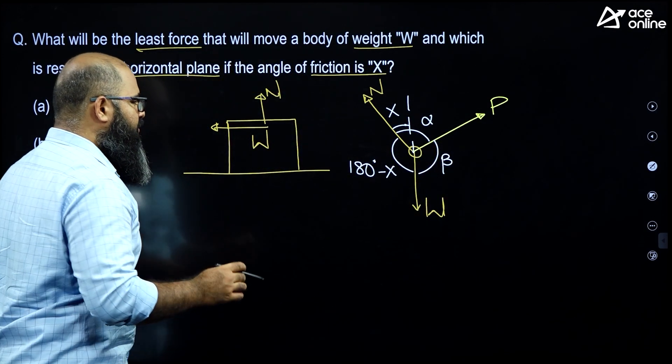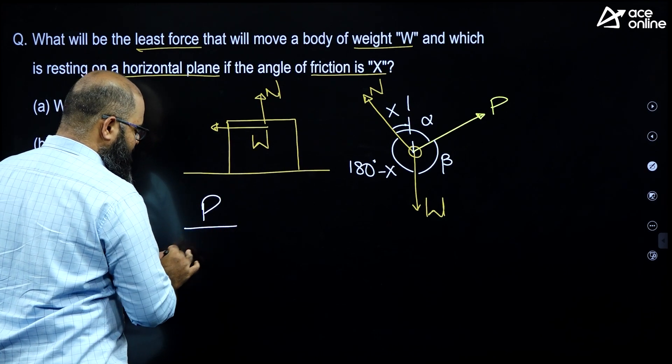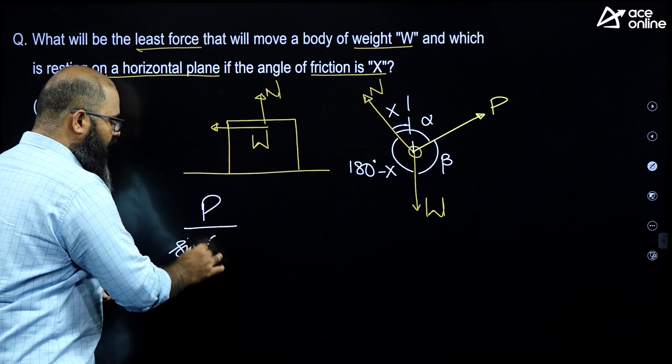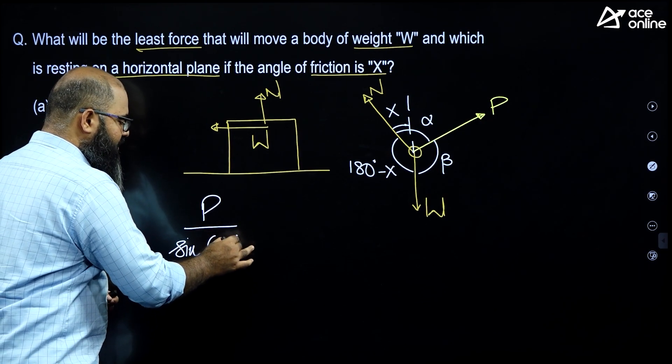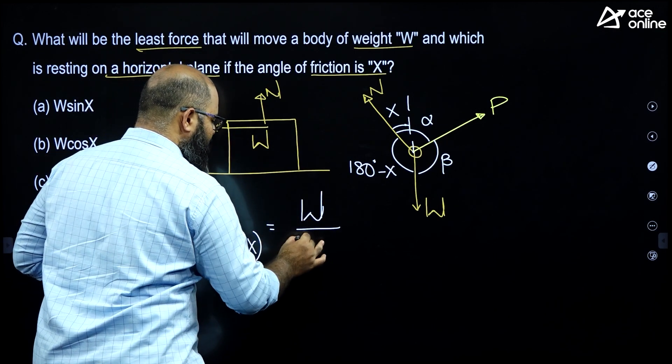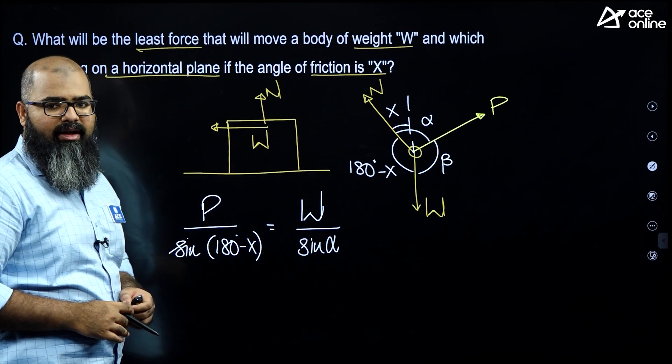Now, if I use Lamy's theorem, what do I get? I get P upon sine of 180 degrees minus X is equal to W upon sine of alpha. W upon sine of alpha.